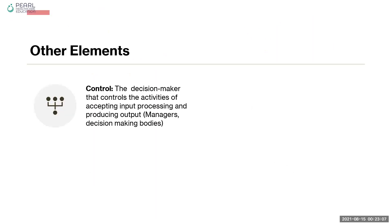As I said, there are other elements. For example, control is a decision maker who controls the activities of accepting input, processing, and producing the output. If you think of an example of an organization, it could be a manager. If you look at the example of your own home, it could probably be your mother or father.